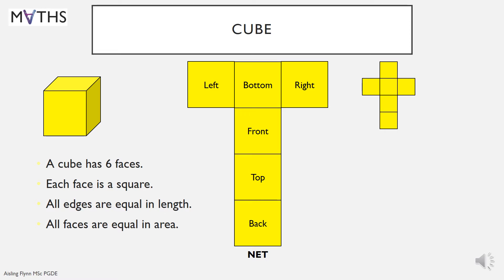Actually, there are alternative nets for a cube. Here's one. There's another. There's another. And there's another. In total, there are 11 possible nets for a cube.